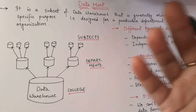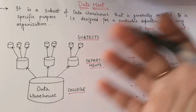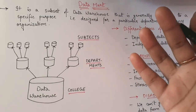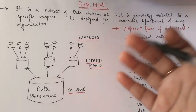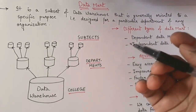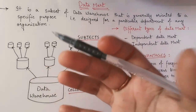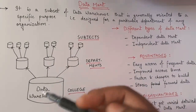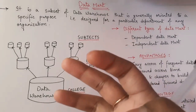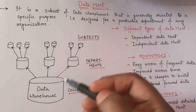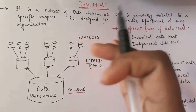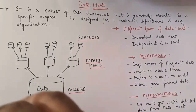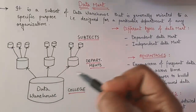The college data warehouse will contain data of college students, college faculties, college staff, details about the college building — how many classrooms, how many machines, how many computers, what is the location of the college, students' results — each and everything related to this college. Now if I want to segregate the data and get data about specific departments individually, I can extract subsets from this data warehouse.